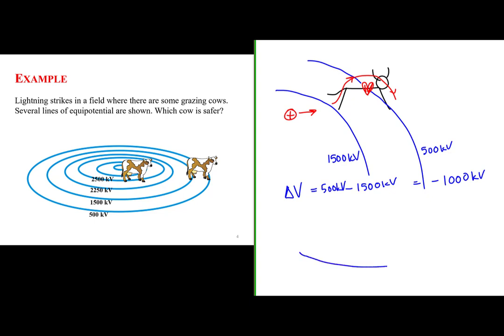Versus the cow that was approximately standing on one equal potential line. Even though the actual value of this equal potential line is much higher — even though 2500 kilovolts is higher than 1500 kilovolts — this cow is safer because there is zero or approximately zero difference in potential between its feet. Since it's approximately zero potential difference between its feet, you will not get a charge going across the feet through the heart. This cow is a lot safer than the other cow.